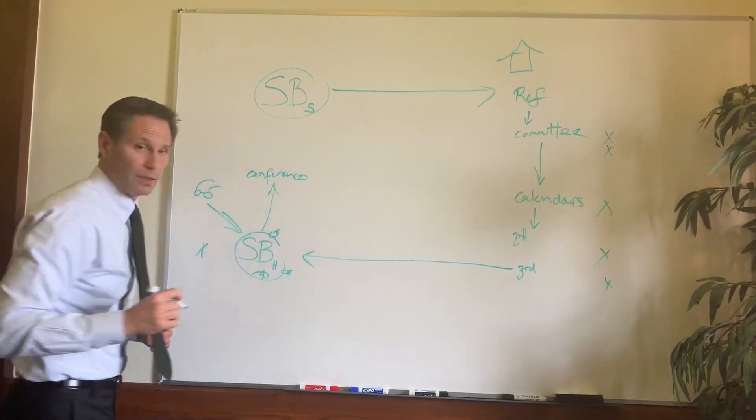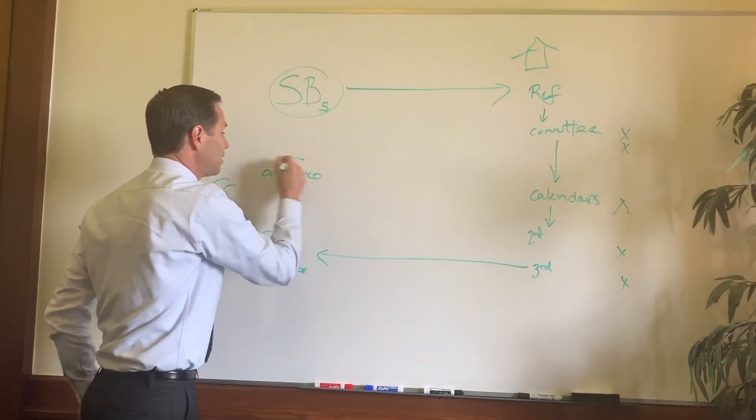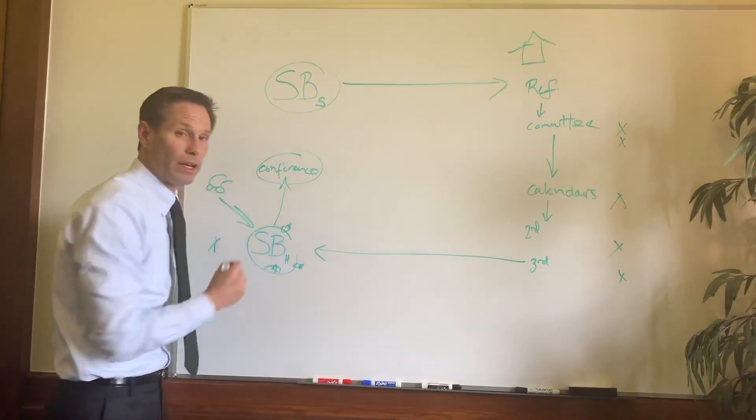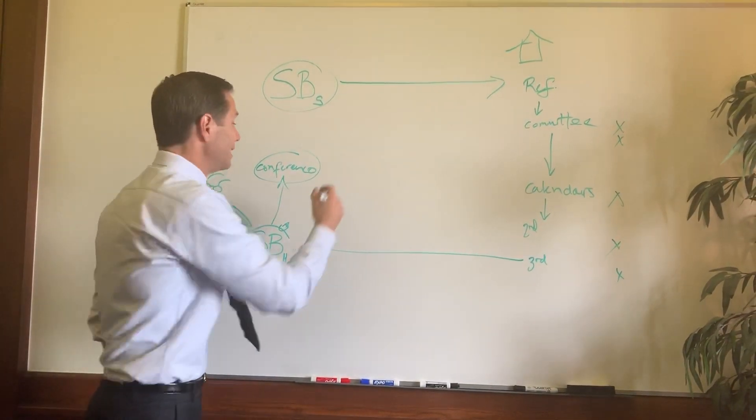And the bill goes up there. And we appoint people from the House and Senate to talk about it and see if we can come to an agreement on a final product. And if we can't come to an agreement, it dies.